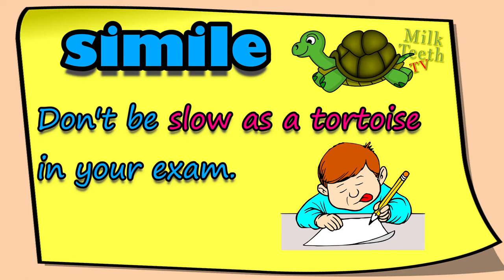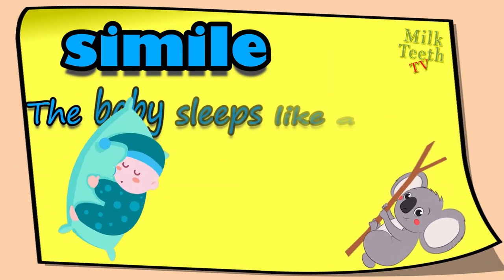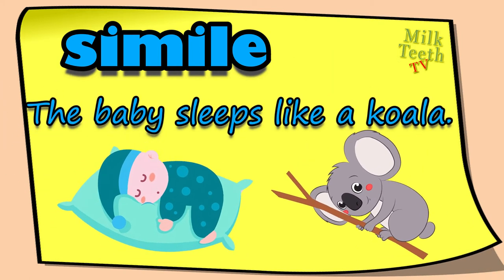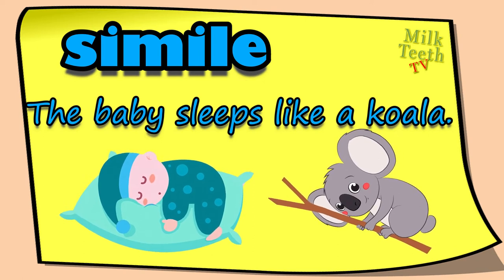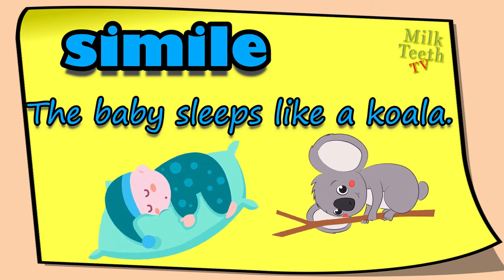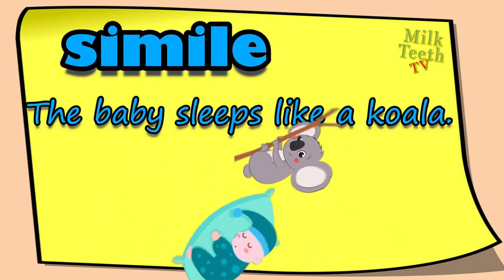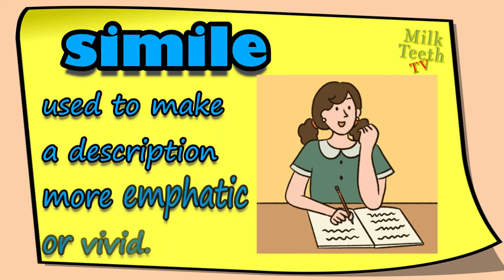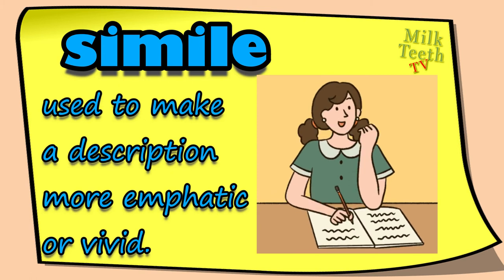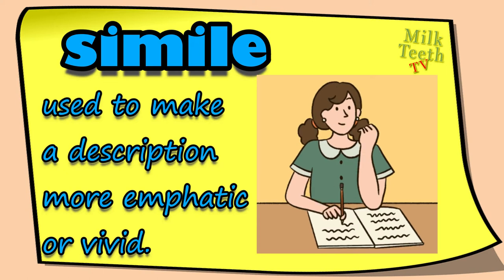Easy, isn't it? Let us see another example: 'The baby sleeps like a koala.' You can see in the picture that the baby is sleeping like a koala, looking just like one. Here we are comparing the baby to a koala using the word 'like.' A simile is used to make a description more emphatic or vivid.